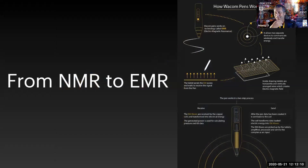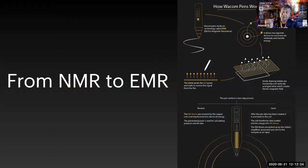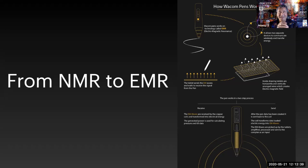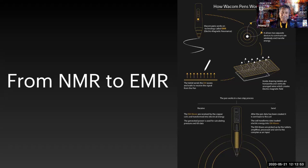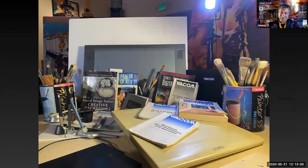A little scientific aside: the way a Wacom tablet works is through electromagnetic resonance, where the surface of the tablet creates an electrical field that is picked up by a coil in the pen, sending back a signal — detecting pressure, tilt, and bearing very sensitively. It struck me as completely ironic that I'd spent over a decade working in NMR with superconducting magnets, and ended up working with EMR for my whole digital paint life.